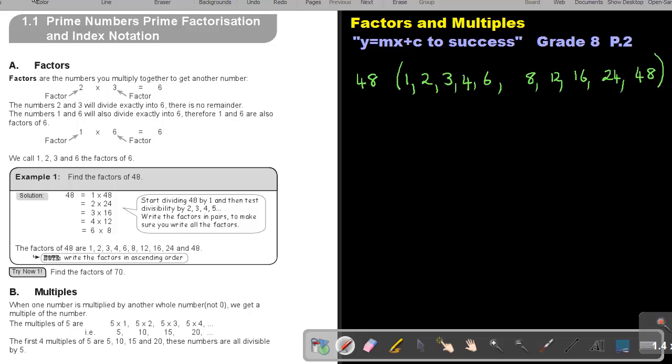And I can test it to see if I have all the pairs. So, 1 times 48 will be 48. 2 times 24 will be 48. 3 times 16 will be 48. 4 times 12 will be 48. And 6 times 8 will be 48. We write the factors in ascending order, from the smallest one to the biggest one. Now, I want you to do the next example. Find the factors of 70. Stop the video and as soon as you are finished, then you can continue the video.